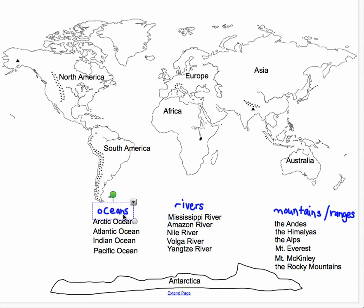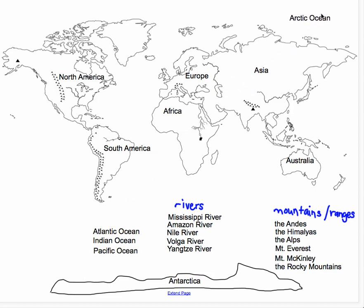Now we're going to talk about the oceans. Oceans are large bodies of water. Remember, the oceans are in between the continents, so this is where oceans could lie. The Arctic Ocean is going to be right above Asia, and that's right next to Russia, where it's very cold and there's a lot of ice. So the Arctic Ocean is right at the top here.